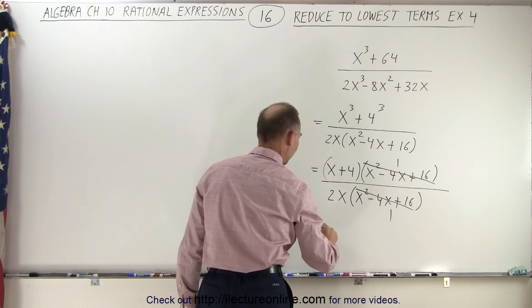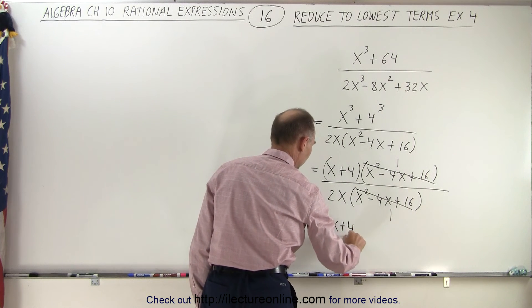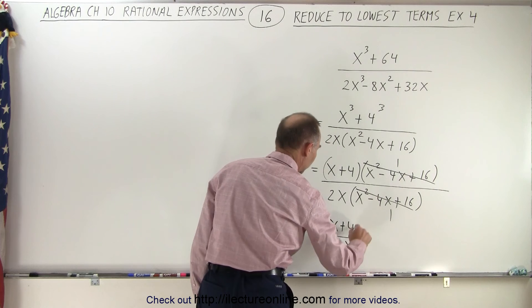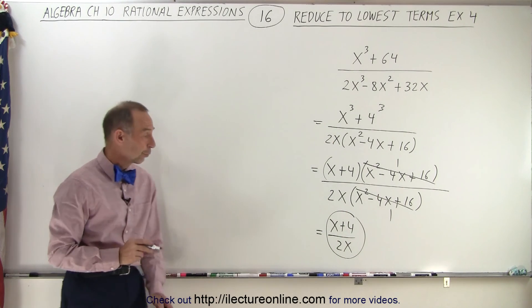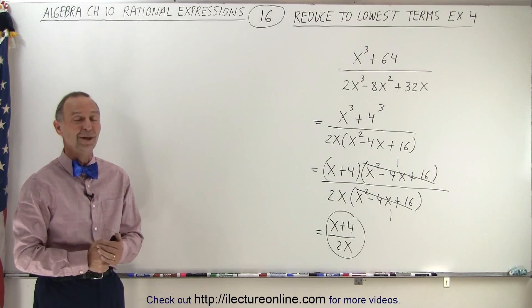That leaves us with, in the numerator, an x plus 4, and in the denominator, a 2x. And so that whole thing simplifies down to simply x plus 4 divided by 2x. And that is how it's done.